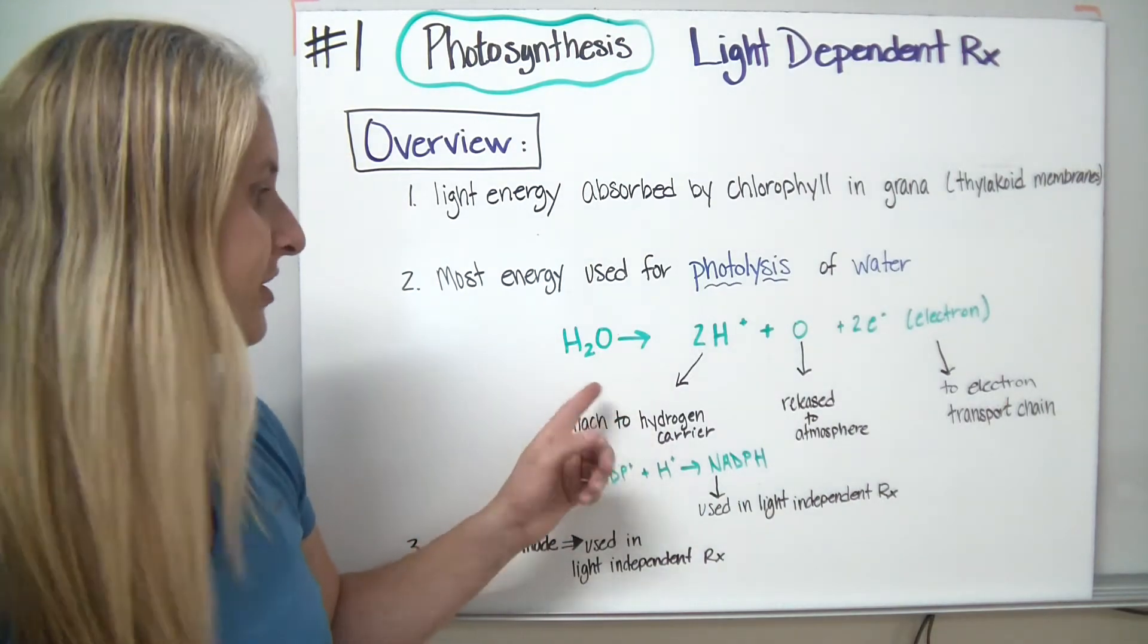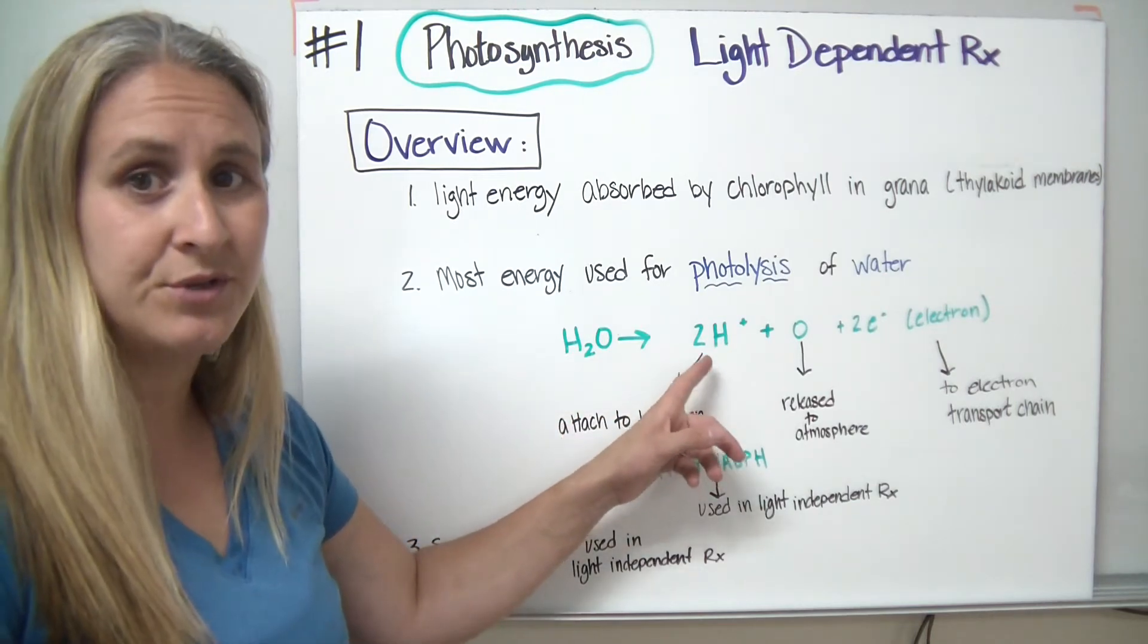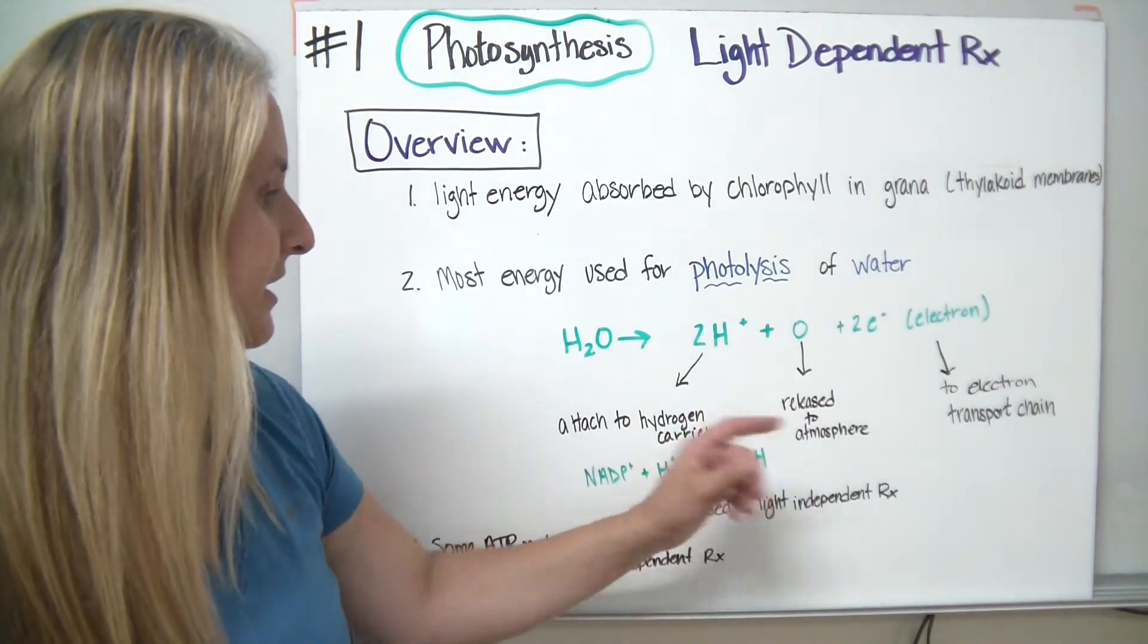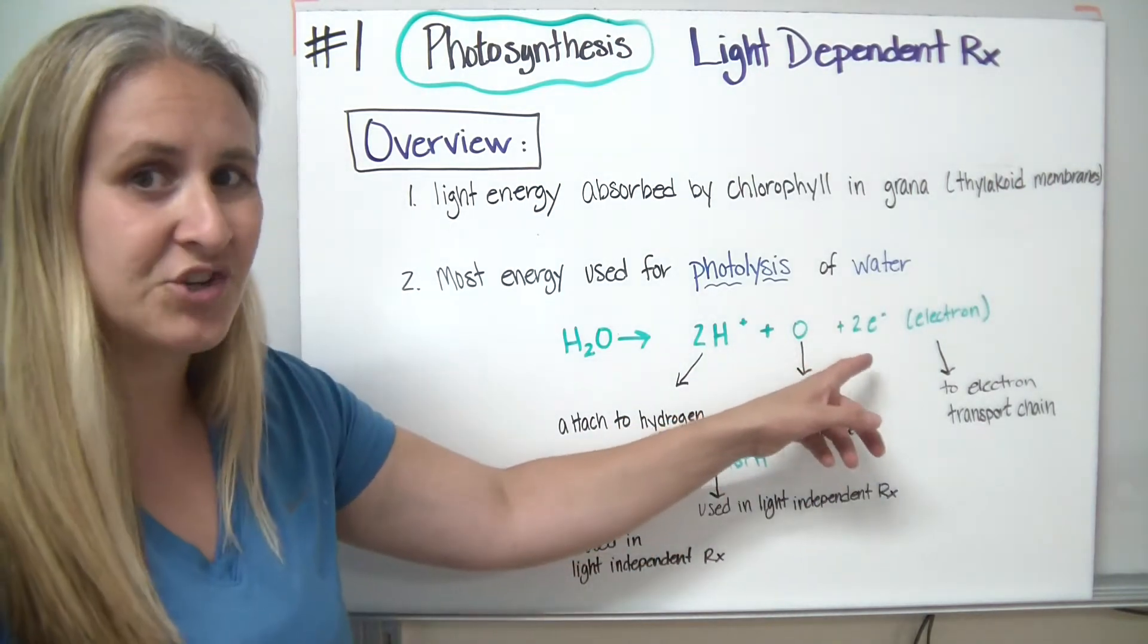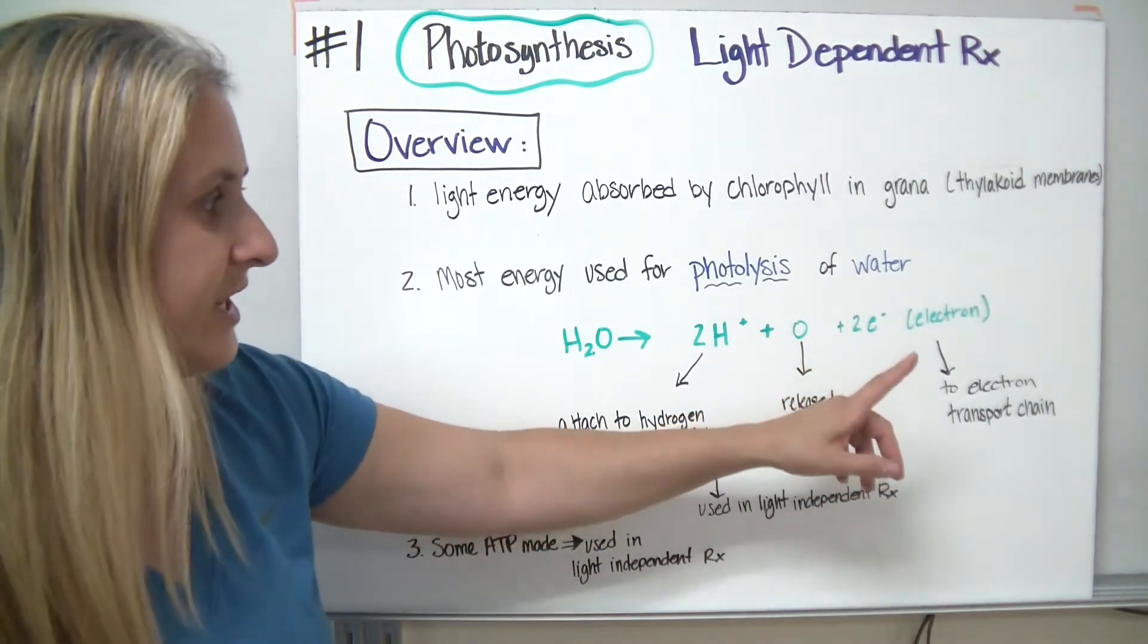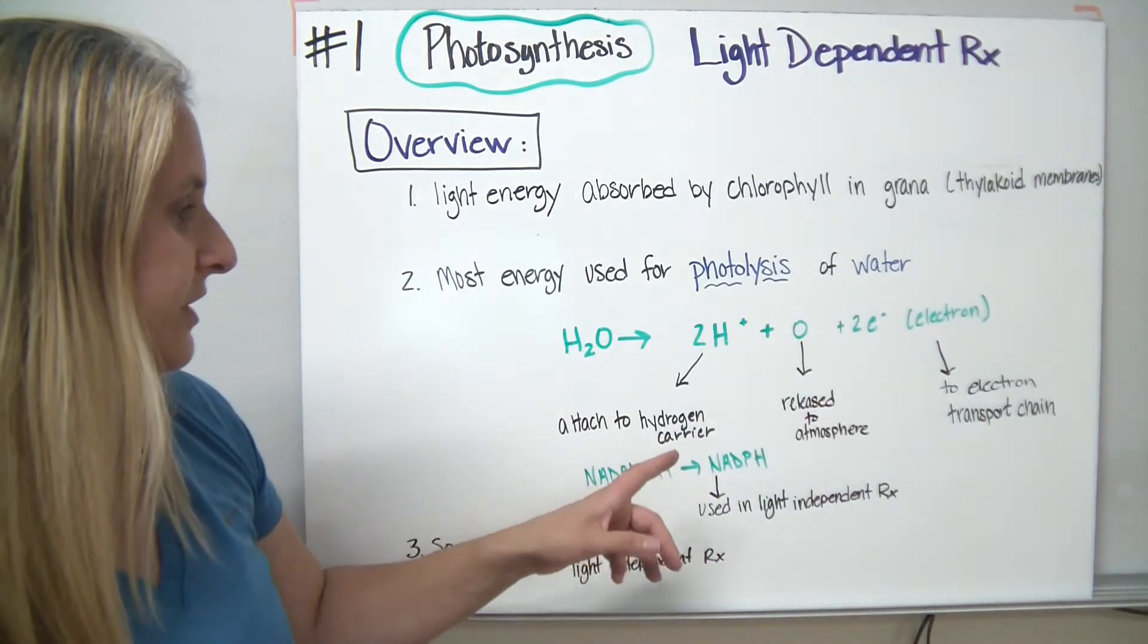So here's the basic reaction. We're taking our water, H2O, and we're breaking into two hydrogen ions. Remember, an ion has a charge to it, and also oxygen. We additionally will get two electrons, which is represented by the E with a dash, if you remember back to physical science. And those are going to enter the electron transport chain.